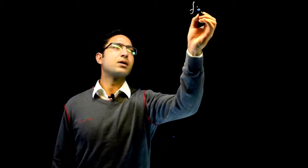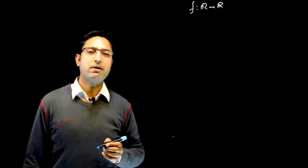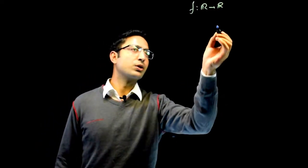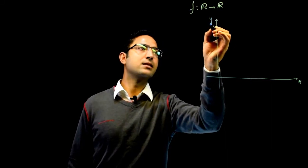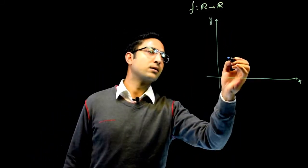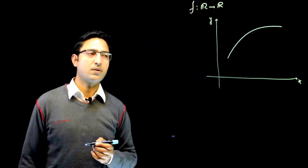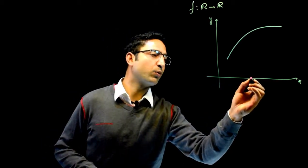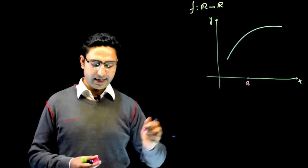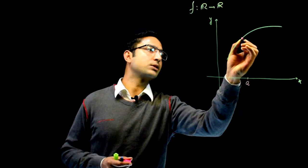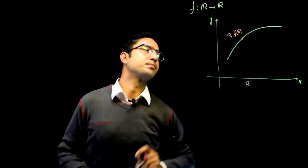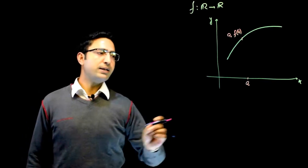Consider a function f which is a real-valued function of a real variable. Since it is a real-valued function of a real variable, it will have a graph. If this is the x-axis and this is the y-axis, suppose this is the graph of the function. We take a point a in the domain of definition, and since a is in the domain, we will have f(a) here. The coordinates of this point will be (a, f(a)).